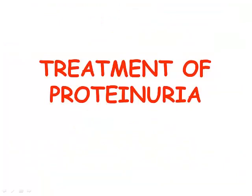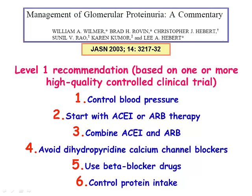How to treat proteinuria: for this part of the lecture, I will use the main message of a paper published in 2003 by a group from Ohio State University, which has great experience in the field. There are several types of recommendations at levels one, two, and three. I will limit myself to level one recommendations, based on one or more high-quality controlled clinical trials. We will deal with controlled blood pressure, ACE inhibitors and ARB therapy, and combined ACE inhibitors and ARB.